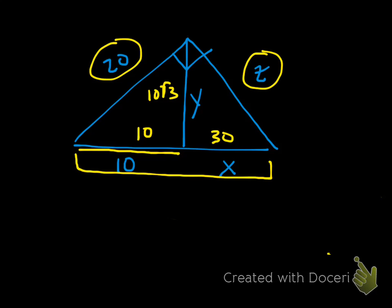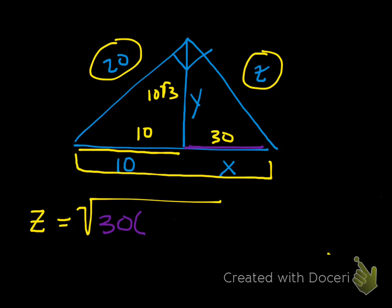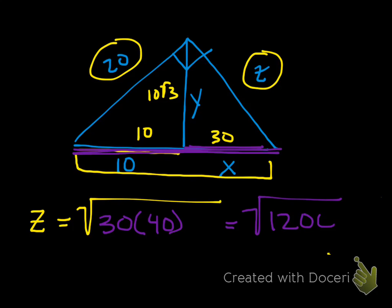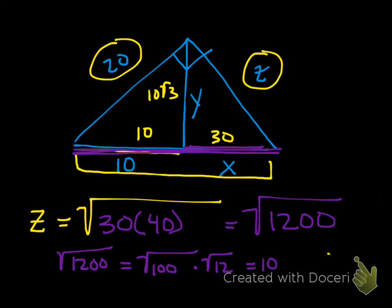Now for Z, which is a leg: the leg theorem says the leg equals the geometric mean of the adjacent leg, which is 30, times the entire hypotenuse, which is 40. So Z equals the square root of 1200. That simplifies to the square root of 100 times the square root of 12, which is 10 times the square root of 12, and further to 10 times the square root of 4 times the square root of 3, equaling 20 times the square root of 3.